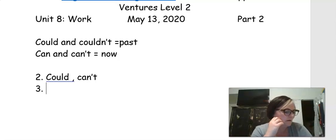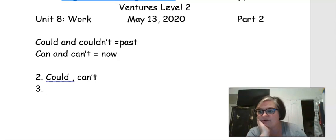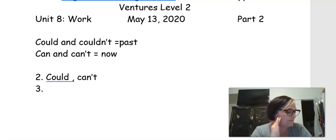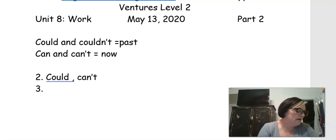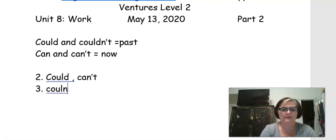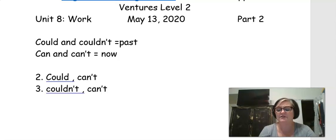So you should have already completed part three so we can go over them together. Dani, let's look at drive 10 years ago. She couldn't, right, because it says no. Couldn't drive 10 years ago. And she can't drive now because it still says no. She couldn't drive 10 years ago. She can't drive now. Number four, Dani, does it run fast? Can she run fast 10 years ago? She could run fast 10 years ago. Can she run fast now? No, she can't.